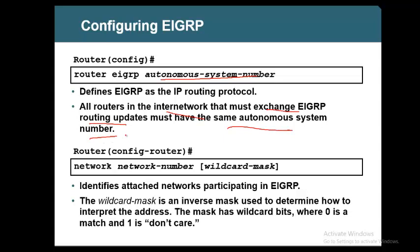Not only to exchange EIGRP routing updates, but first of all to form a neighbor relationship, the routers need to be in the same autonomous system number. Only after forming a neighbor can any update be shared. So in order to form a neighbor, the routers need to be in the same autonomous system.